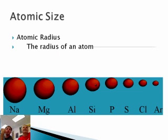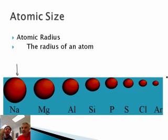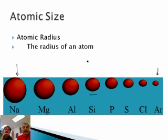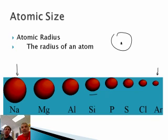In atomic size, think of atoms having different sizes. Sodium is bigger than, say, argon, and so is silicon. Think of different sized spheres. That's atomic radius — it's just the radius of an atom. The radius is the distance from the center of the sphere. Don't think of these as circles, but as spheres.